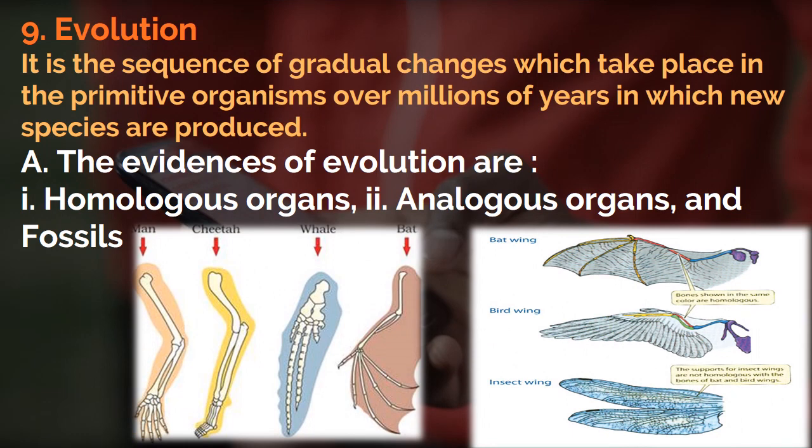Evolution is the sequence of gradual changes which take place in primitive organisms over millions of years in which new species are produced. The evidences of evolution include: 1. Homologous organs, and 2. Analogous organs.